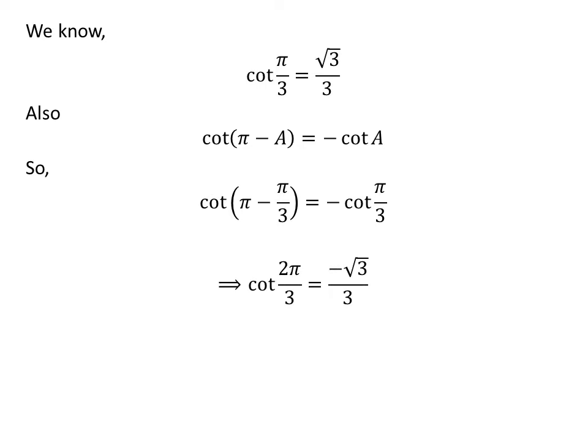Applying this identity, since pi minus pi upon 3 is equal to 2 times pi upon 3, and plugging in the value of cotangent of pi upon 3, we get cotangent of 2 times pi upon 3 is equal to minus square root of 3 upon 3.